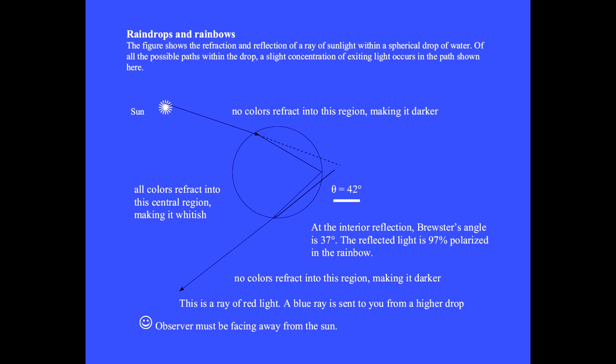Since 42 degrees are needed between you, the raindrop and the sun, there are no rainbows in winter when the sun does not reach high enough into the sky.